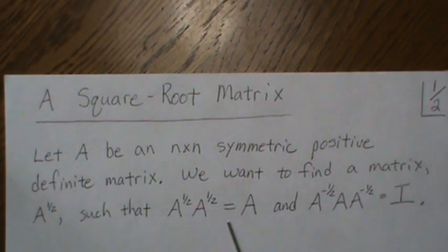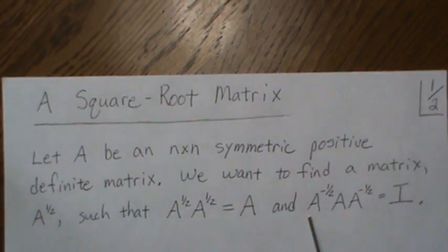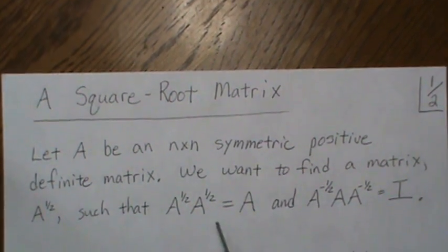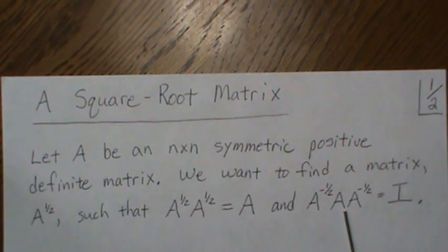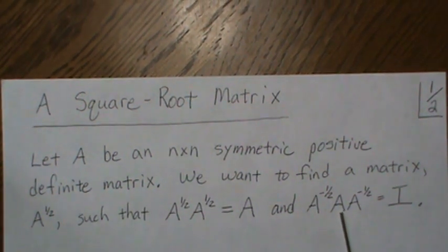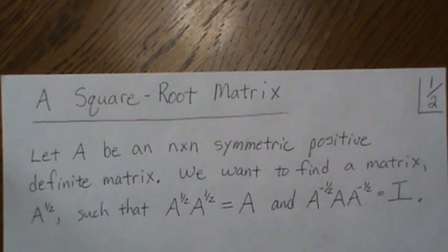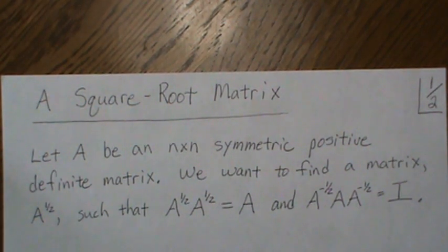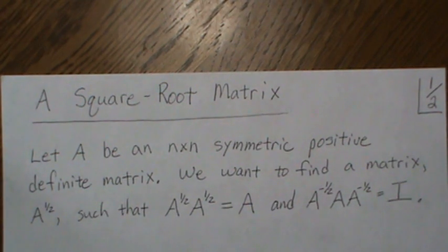But then from this, we can also develop an inverse. So we take the inverse of the square root matrix, pre and post multiply A by those matrices, and you get the identity. And so there's this whole relationship between the square root matrix and the original matrix A.